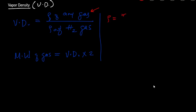How do you calculate the density of any gas? Density is mass divided by volume, so we calculate the mass and volume of that gas. For convenience, we take the volume as 22.4 liters — so V₁ (volume of any gas) = 22.4 liters.